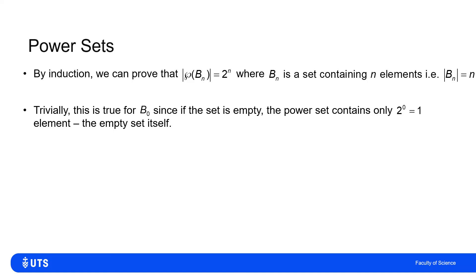For B_0, if B contains zero elements, there's only one possible subset — the empty set. If we have no elements to choose from, we only have one choice, which is picking nothing at all. So B_0 has cardinality 0, and its power set has cardinality 1, which is 2^0.